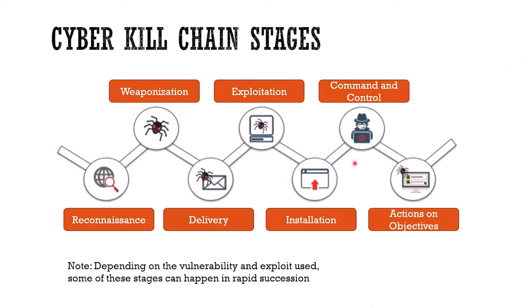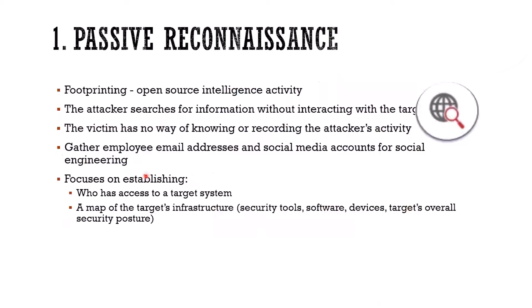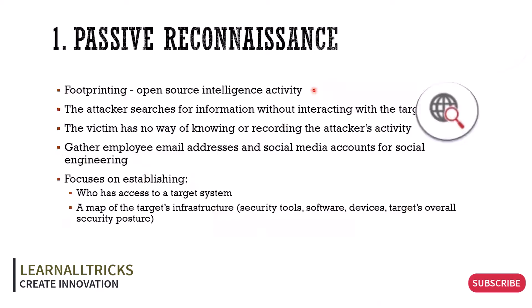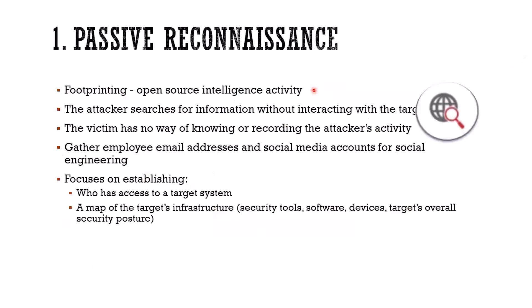Passive reconnaissance means we are gathering intelligence. We're doing open source intelligence activity — going on the internet and not letting the target know what we're doing. We're not going to interact with the target or alert them. We might be surveilling them from a distance. We could get employee email addresses, social media accounts. We'll focus on establishing who has access to the target, try to map the infrastructure — what tools, software, and devices they use — and their overall security posture.